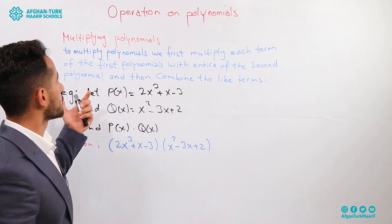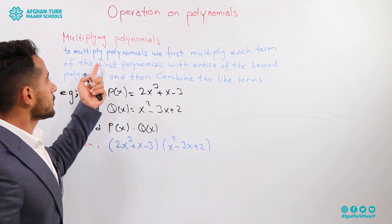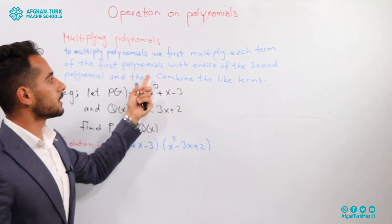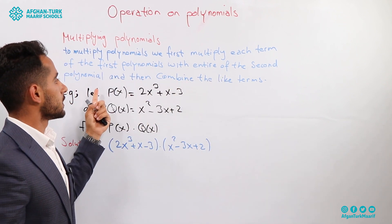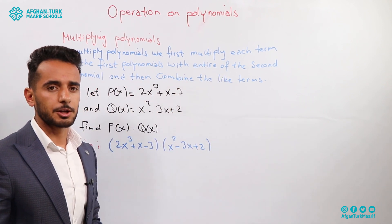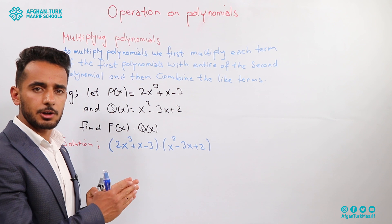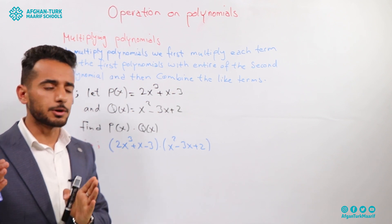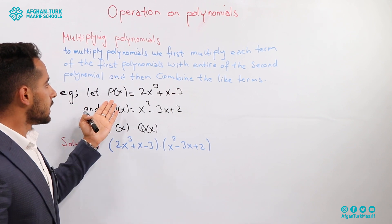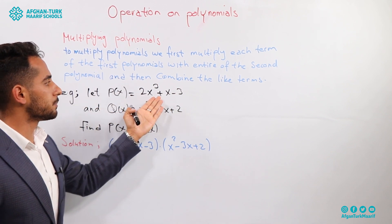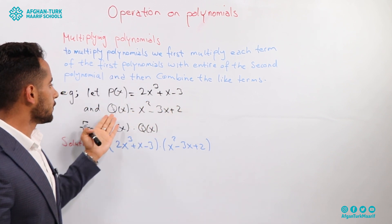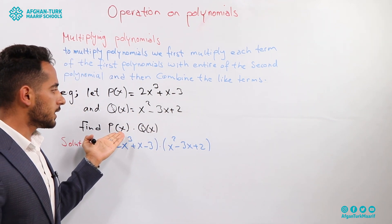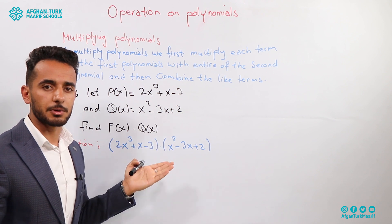We are starting from multiplying polynomials. To multiply polynomials, we first multiply each term of the first polynomial with the entire second polynomial, and then combine the like terms. For example, if p(x) equals 2x³ plus x minus 3 and q(x) equals x² minus 3x plus 2, we are asked to calculate the multiplication of these two polynomials.